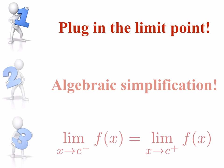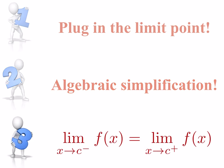To recap: the first thing we want to remember about limits is that we'll plug in the limit point first when trying to evaluate them. Second, if plugging in the limit point doesn't work, we'll attempt an algebraic simplification and then plug in. And finally, the theoretical aspects of limits indicate that the limit from the left has to be equal to the limit from the right for there to be a limit at c.